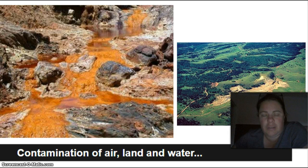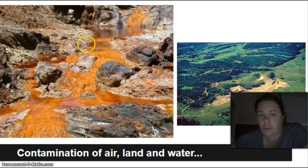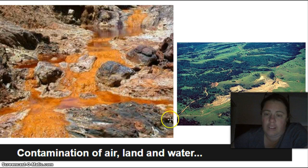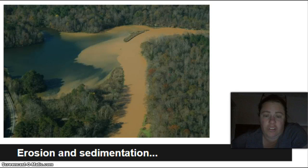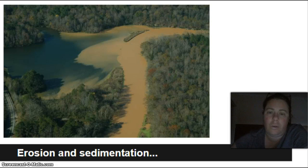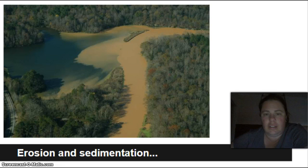The more obvious impacts include contamination of air, land, and water. Water near mining sites can look seriously discoloured and is not safe for animals to drink. Erosion is also visible — tyre tracks left behind after mining take a very long time to recover. Along with erosion comes sedimentation, where sediment particles wash into waterways, drastically reducing water quality and making conditions very difficult for fish.